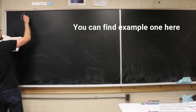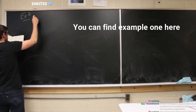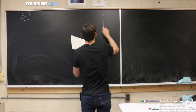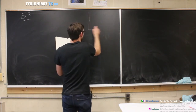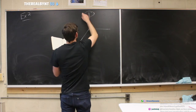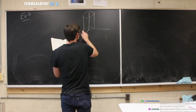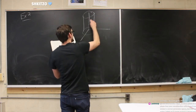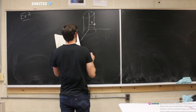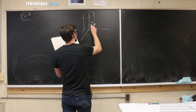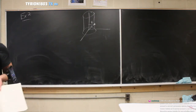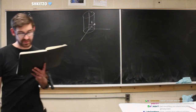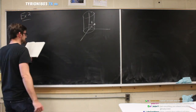Example two: a particle confined to move on the surface of a cylinder. We have a cylinder with some radius R, and there's going to be some distance from the origin we'll call little r. The particle is confined to move on the surface of the cylinder but it can move in any direction. We're going to be working in cylindrical coordinates.